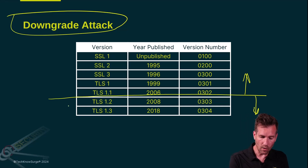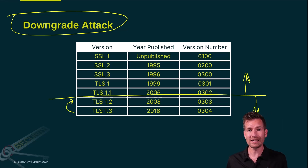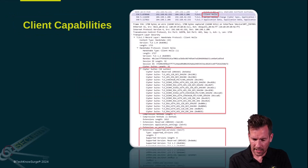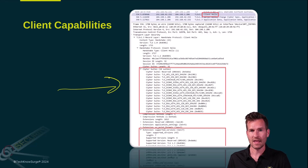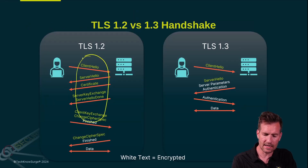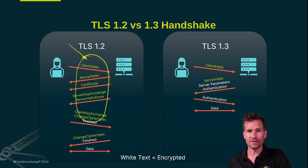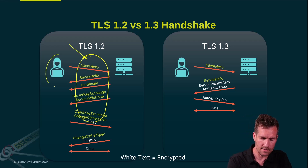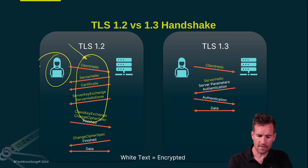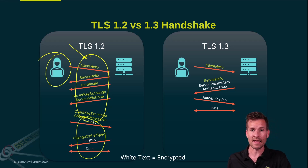A downgrade attack will try to trick communication into bringing it down to a lower level than it should be. TLS also has cipher suites that it's going to support — supporting too many cipher suites also makes it susceptible to this downgrade attack. Since some of this communication from the beginning is not encrypted, there could be a machine in the middle that gets involved and downgrades the capabilities of the user, causing communication from then on to be at a weaker quality, not at today's standards.